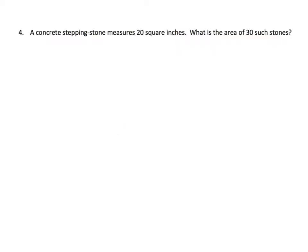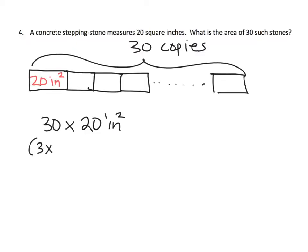So that's going to be 3 times 10 times 2 times 10. Then using the commutative and the associative property, that gives us 3 times 2 times 10 times 10.